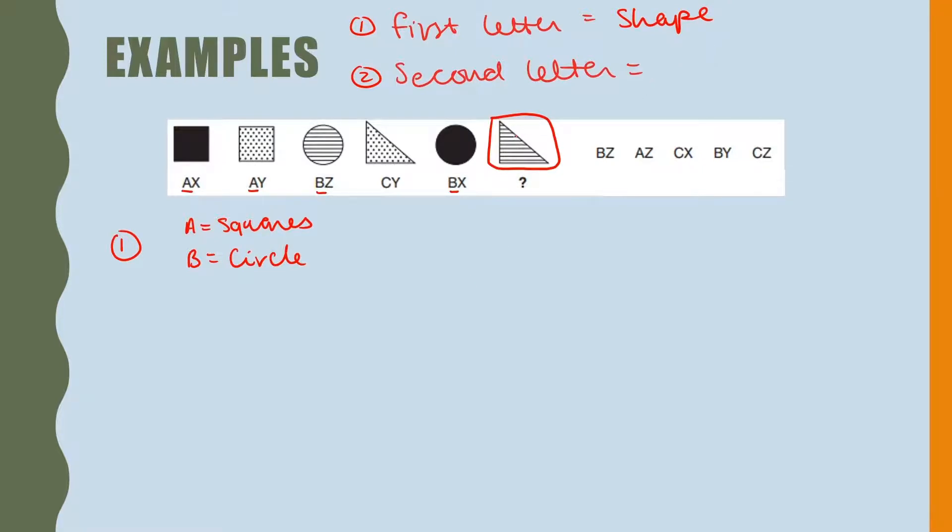This question is asking us what the triangle represents. Here we can see a triangle. A triangle, that's a letter C. So we know that C equals a triangle.